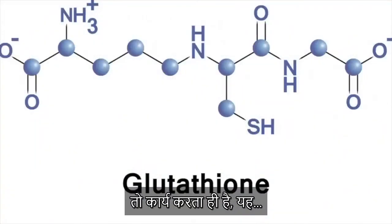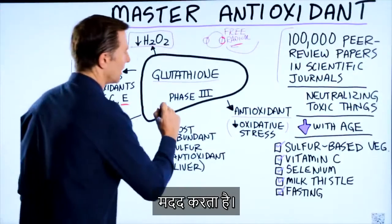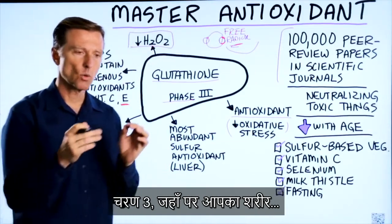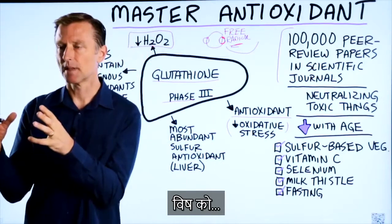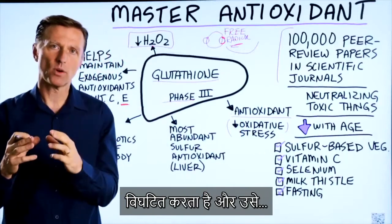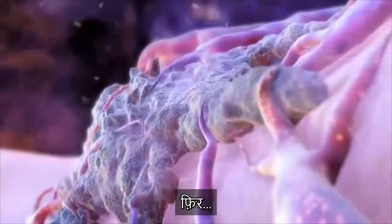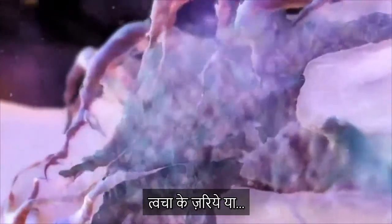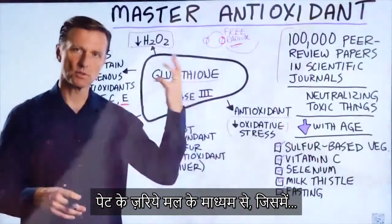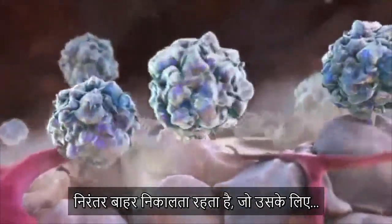Glutathione not only acts as an antioxidant, it also helps in detoxification. There are three phases of detoxification — phase one, phase two, phase three — where your body takes a poison and through different enzyme reactions breaks it down into a harmless particle and gets rid of it through either the skin, the kidneys via urine, or through the bile, which passes through the liver and intestine.